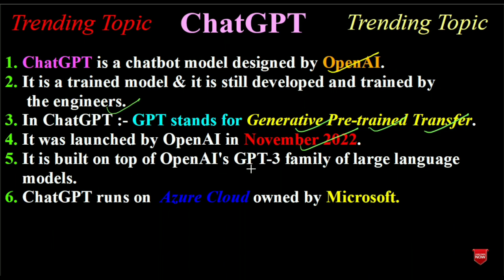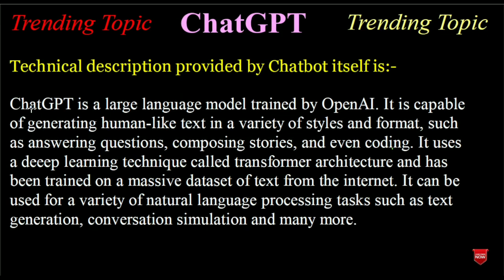It is built on top of OpenAI's GPT-3 family of large language models, and ChatGPT runs on Azure Cloud, which is owned by Microsoft. The technical description provided by ChatGPT itself is: ChatGPT is a large language model trained by OpenAI, capable of generating human-like text in a variety of styles and formats such as answering questions, composing stories, and even coding. It uses a deep learning technique called transformer architecture.